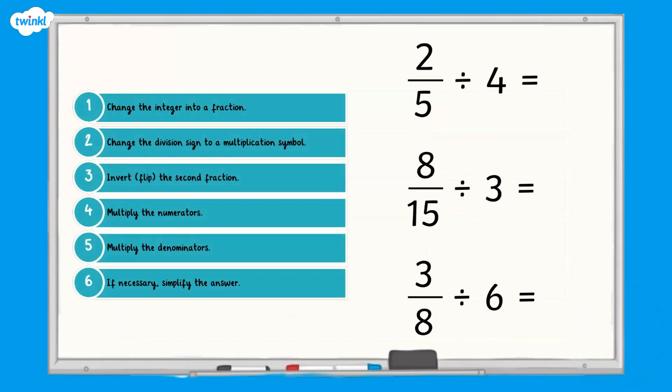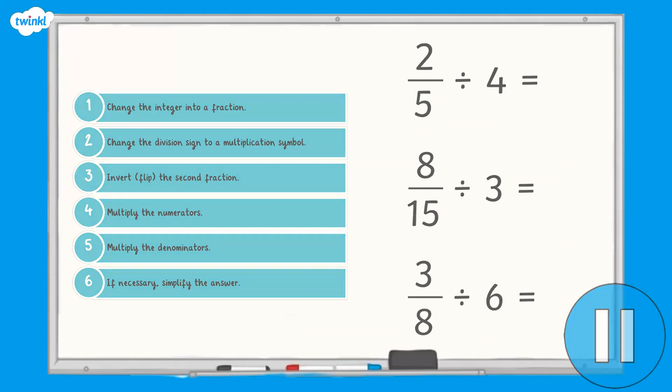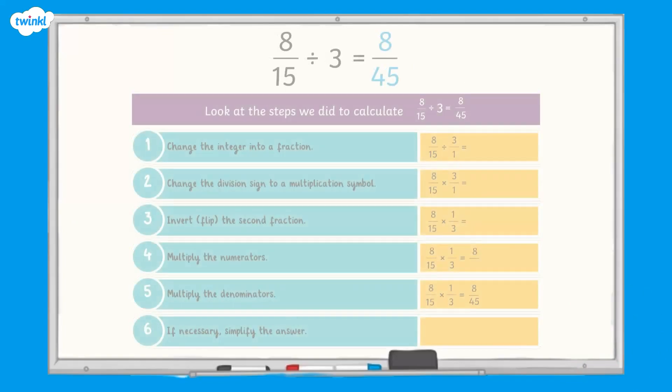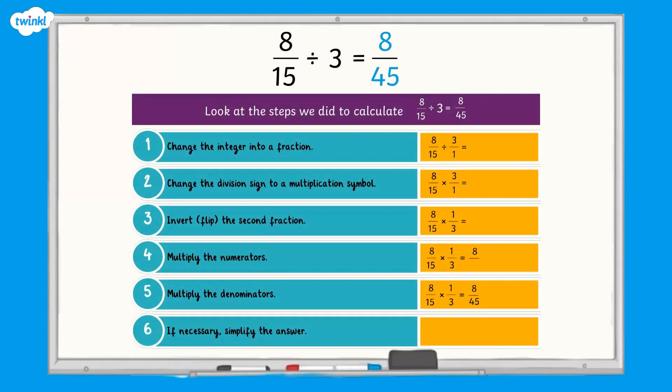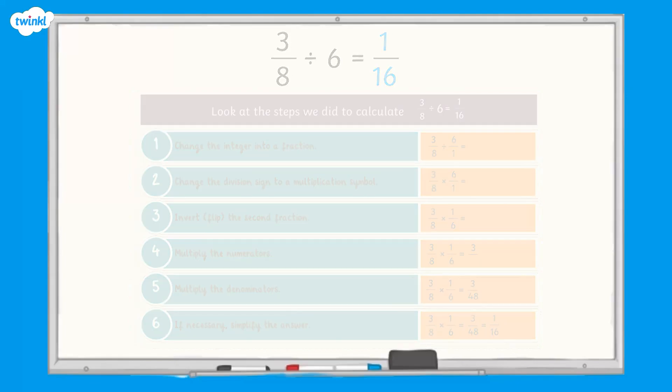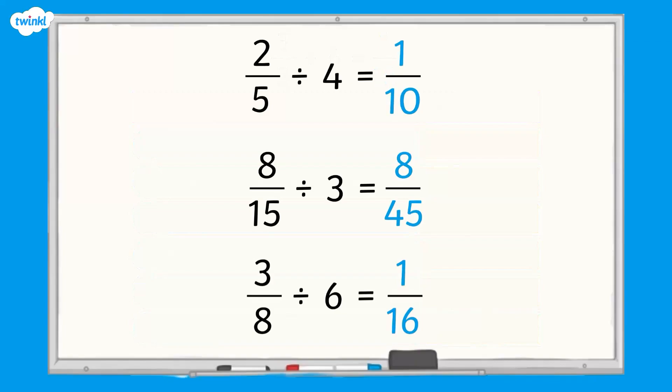Now it's your turn. Work through each step to solve these calculations. 2 fifths divided by 4 equals 1 tenth. 8 fifteenths divided by 3 equals 8 forty-fifths. 3 eighths divided by 6 equals 1 sixteenth. How did you get on? You can always pause again if you need to take a closer look.